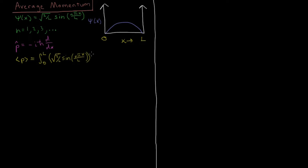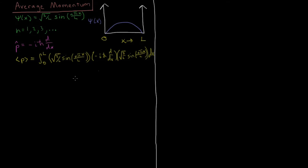Then we have the operator, minus i h-bar d/dx, and that operator is going to act on the wave function. We need to include the normalization constant: square root of 2 over L, times sine of n pi x over L, and then all of that is integrated with respect to x.